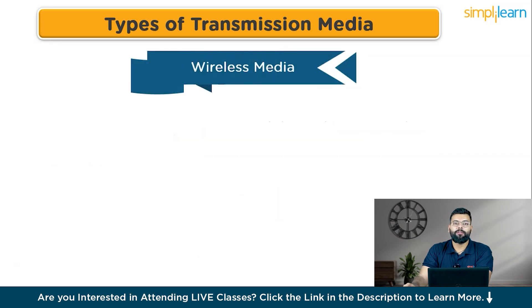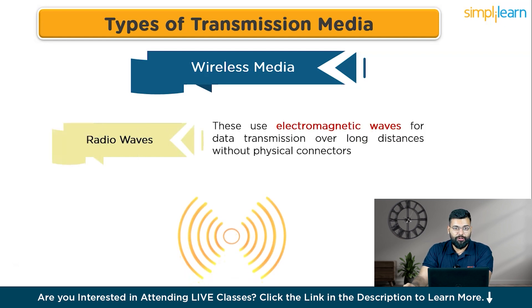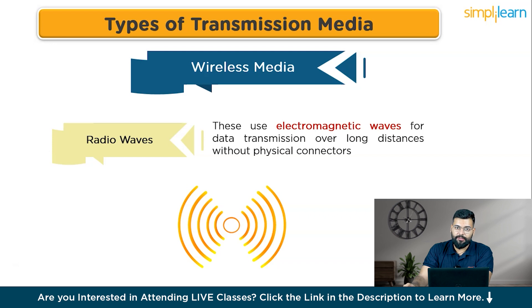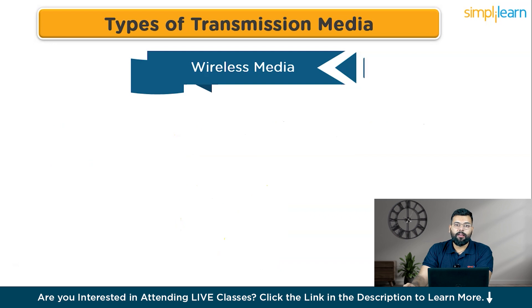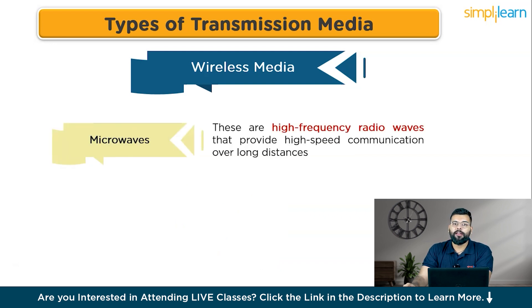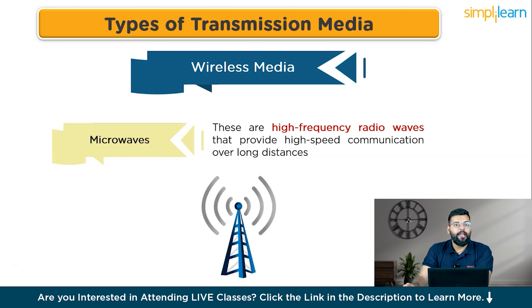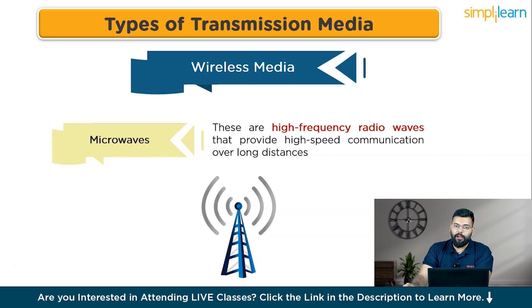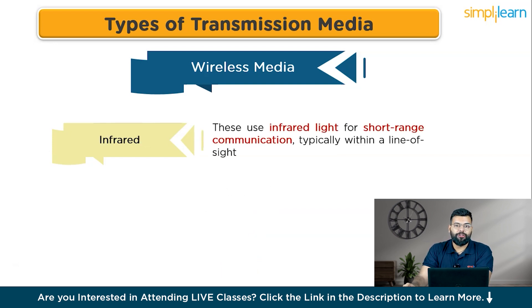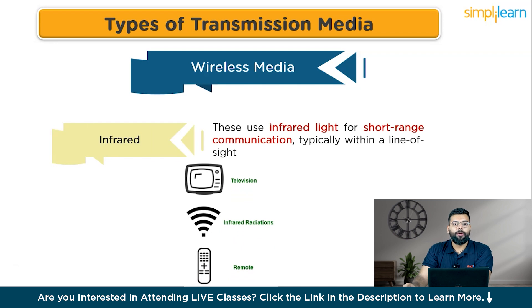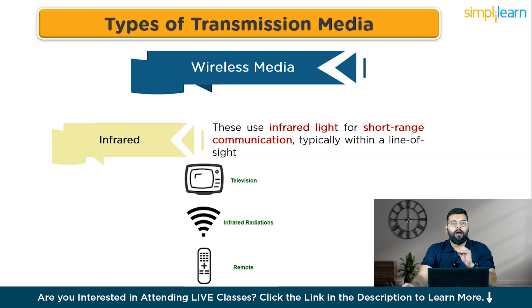In wireless media, first are radio waves — using electromagnetic waves for data transmission over long distances without physical connectors, used in Wi-Fi, AM/FM radio, and mobile communications. Then come microwaves — highly frequency radio waves providing high-speed communication over long distances, used in satellite communications and point-to-point links. Finally, infrared — using infrared light for short-range communication, typically within a line of sight, used in remote controls and short-distance data links. These transmission media are the physical paths that connect devices in a network, enabling the flow of data across the globe.